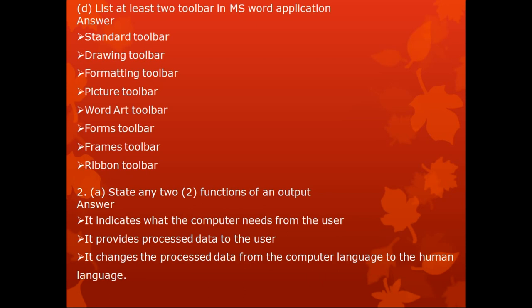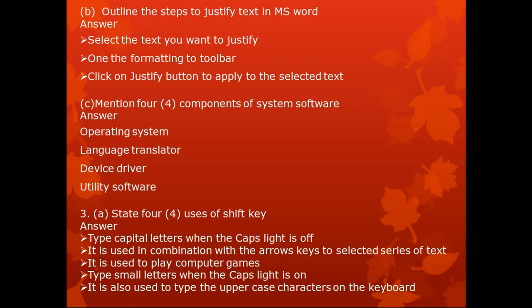Question 2. State any two functions of an output device. An output device indicates what the computer needs from the user, provides processed data to the user, and changes processed data from computer language to human language. To justify text in MS Word: select the text you want to justify, then on the formatting toolbar click the justify button to apply to the selected text.